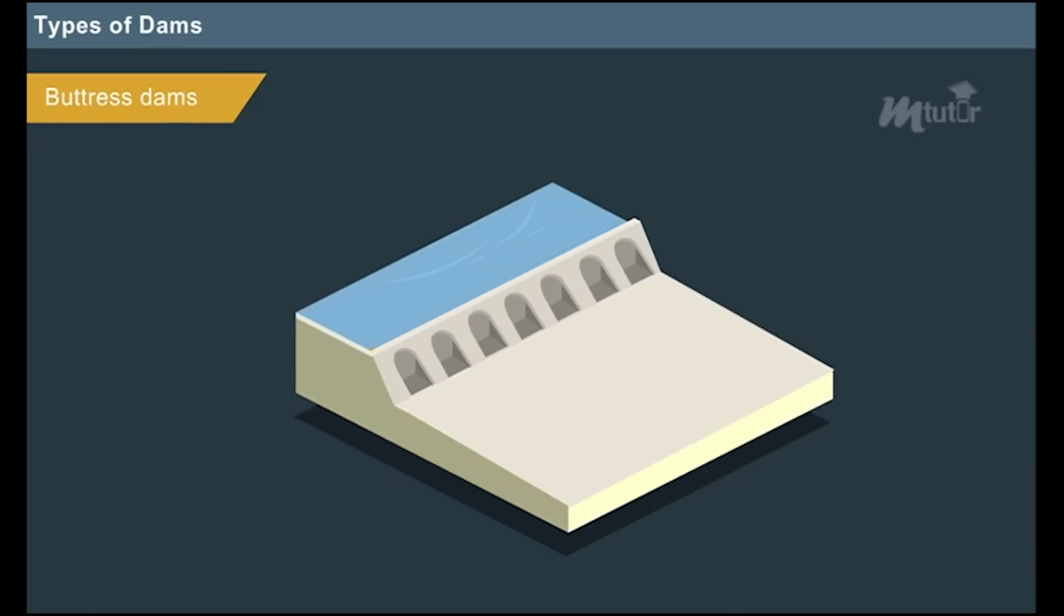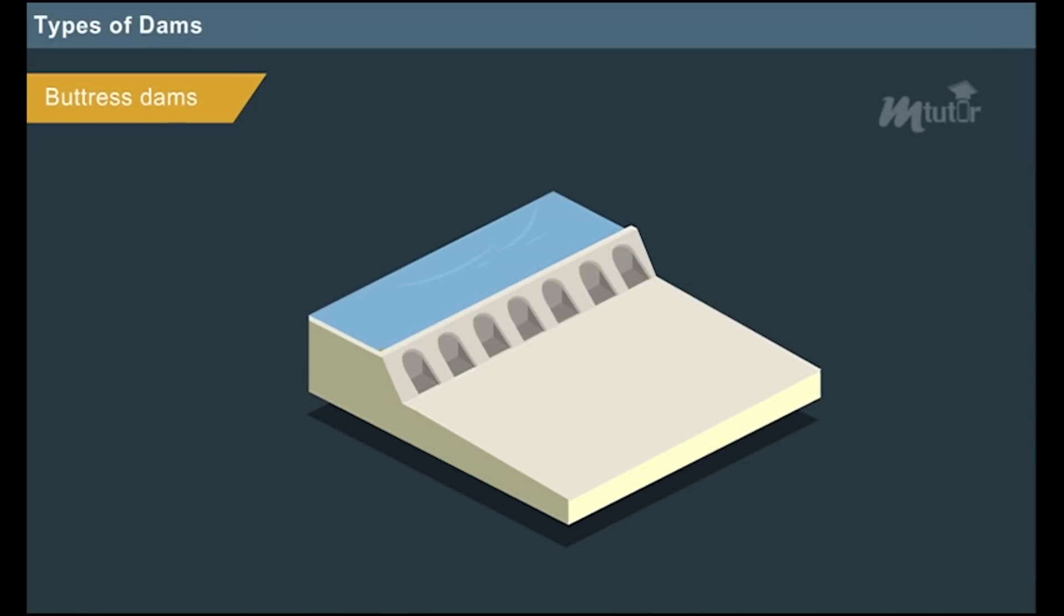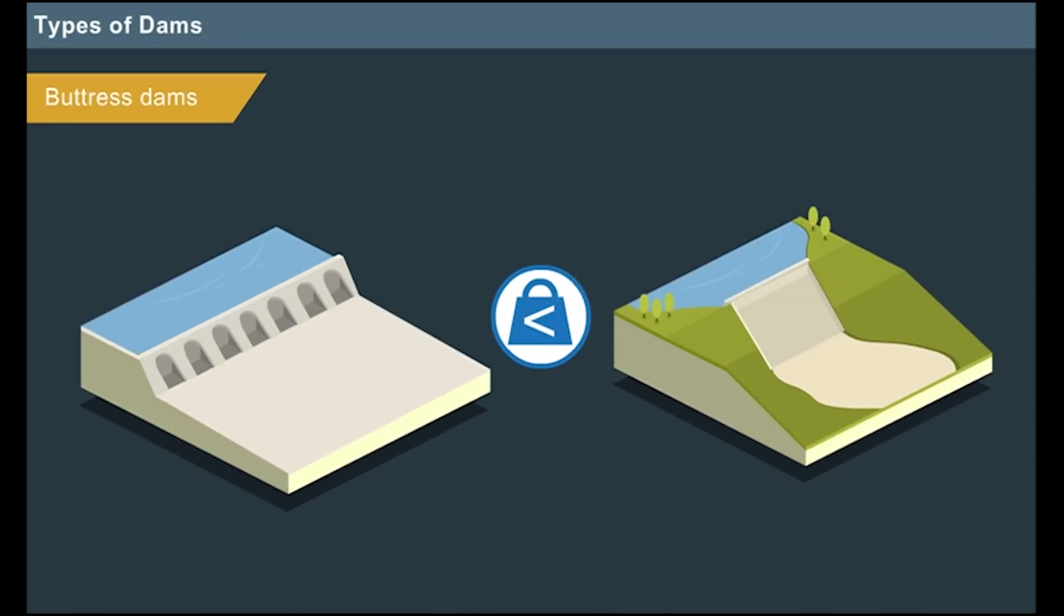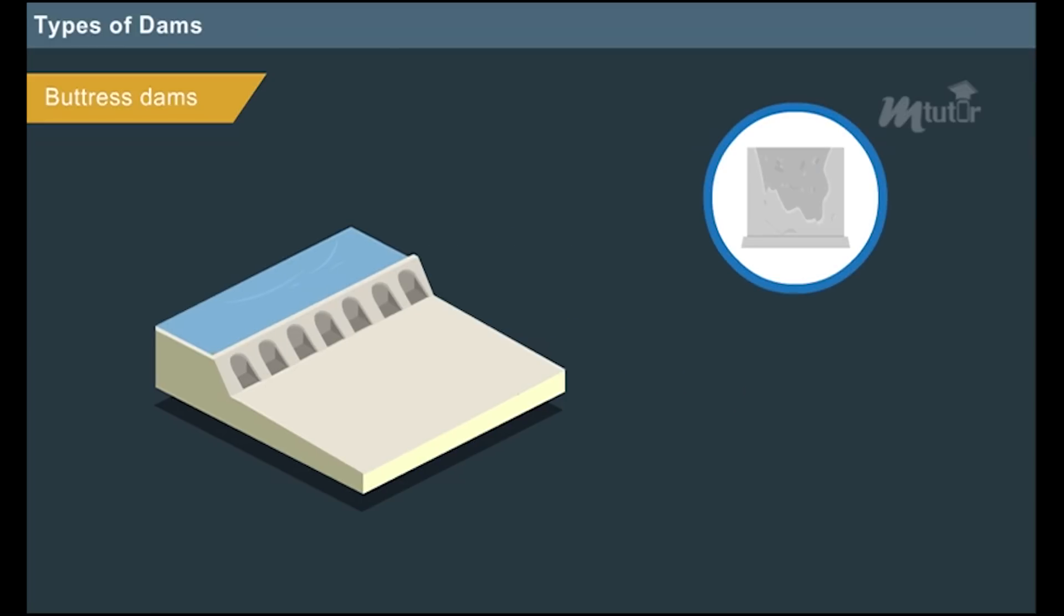Buttress dams: These dams are constructed with large number of piers or buttresses which divide the space into a number of spans. The major advantage of buttress dams is that it is less in weight than gravity dam. Hence, they can be constructed even on weak foundations. However, the major disadvantage is that the concrete facing the upstream side of the dam tends to deteriorate which seriously affects the strength of the dam.